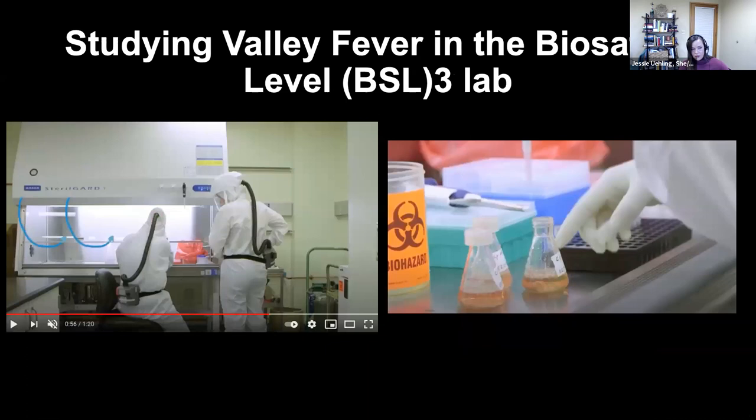To grow the organism and study it in a lab, you need what's called a biosafety level three, or BSL-3. These images show the kind of precautions you'd have to take to study COVID or any other aerosolized pathogen that people get when they inhale infectious particles. The lab is specially negative-pressurized, we wear Tyvek suits, and all of the work happens inside of a laminar flow hood.